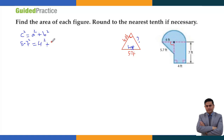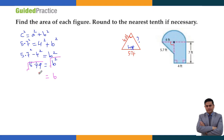So b² = 5.7² minus 4². Using the calculator: 5.7² minus 4² equals 16.49, so b equals approximately 4.06, which we round to 4.1. So the missing side of the triangle is 4.1 feet. Now I have all the values needed to find the area of the composite figure.